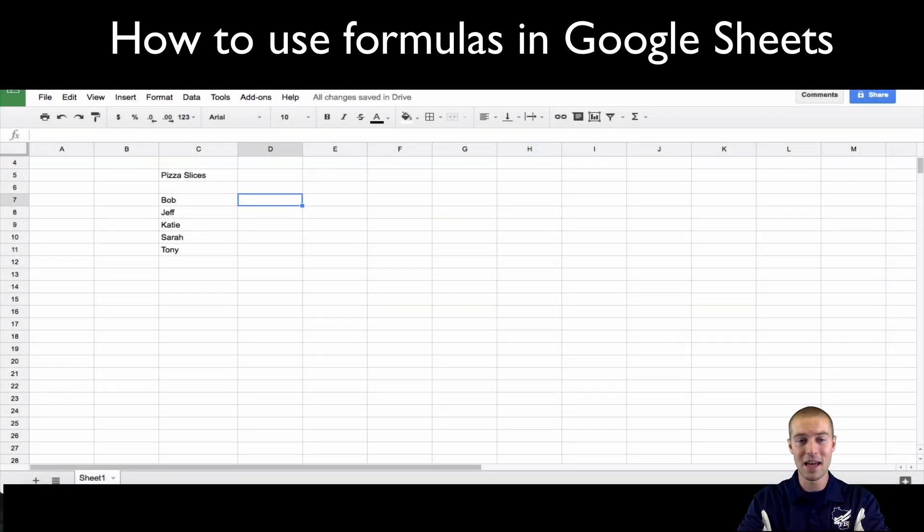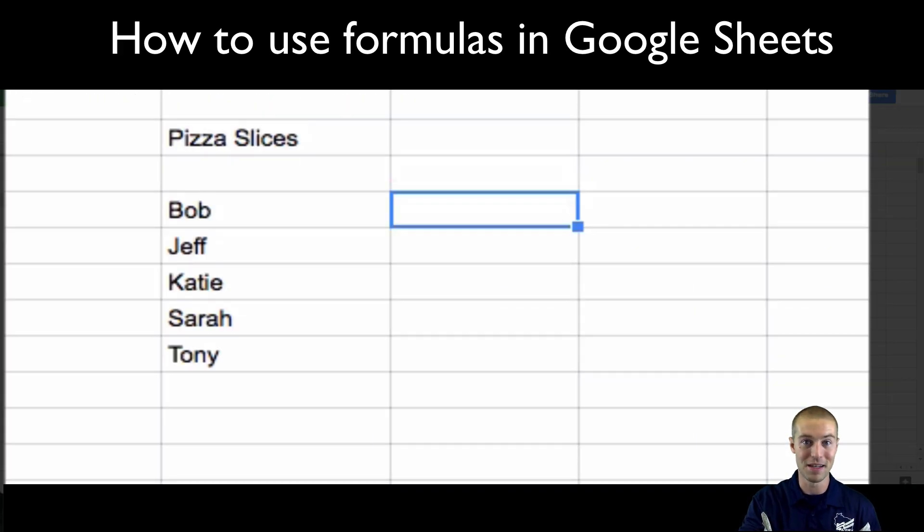In this example, you need to have a table of information. Just like in any math problem you've probably seen a hundred different times - certain people eating certain pieces of pizza. So how many slices did everyone eat?